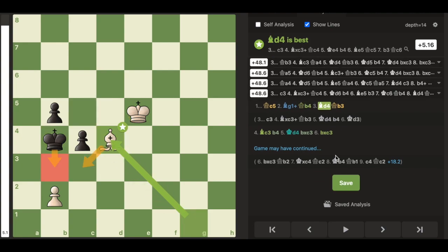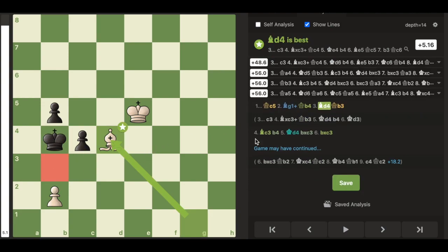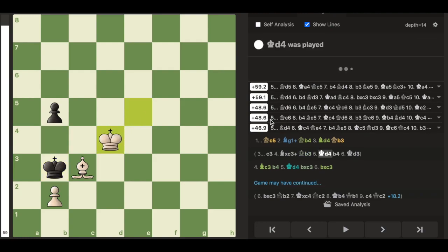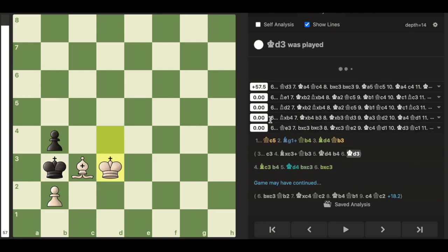White's best move here to win the position is bishop to d4, which kind of forces king to b3. So instead, the best move for black is c3, and after bishop takes c3, king to b3.